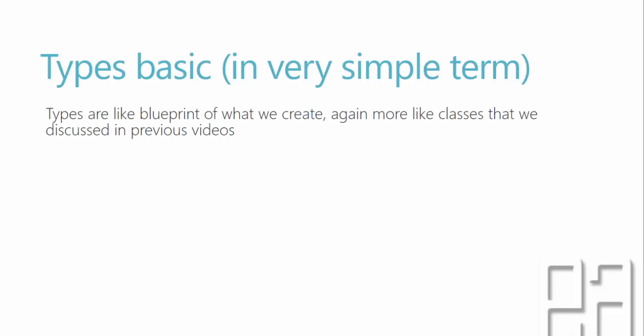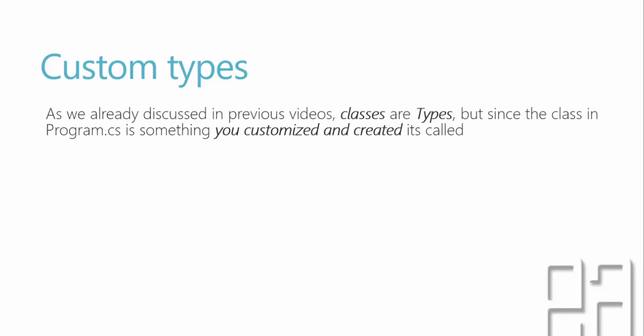So what are types? Types are like blueprints of what we create — more like classes that we discussed in our previous videos. As we already discussed, classes are types. But since the classes in program.cs that we created in our previous video are something you customized and created, it's also called a custom type.